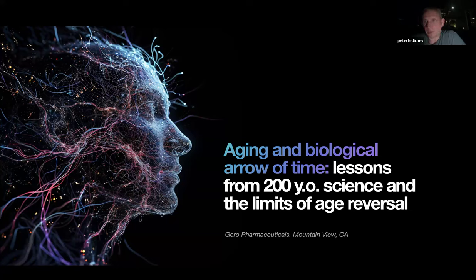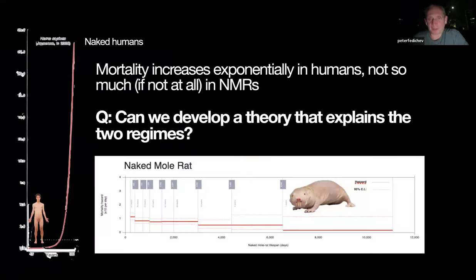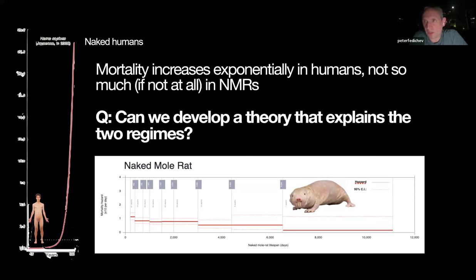My name is Peter Fedichev. I had a decent job doing theoretical physics, and then something happened — more than 15 years ago somebody showed me that there are mammals that do not age, and I got really interested. When I was small I was reading about primitive creatures that don't age, but I didn't care because I had a high esteem of our mammalian ancestry.